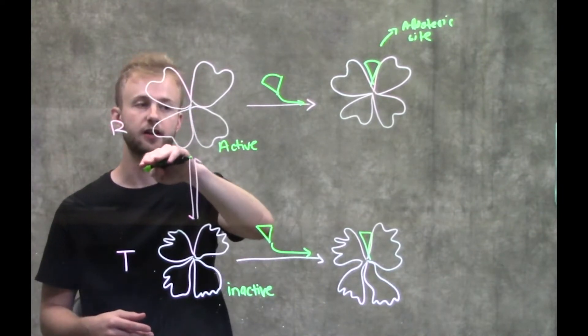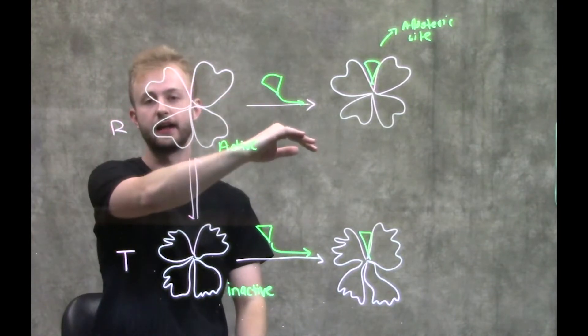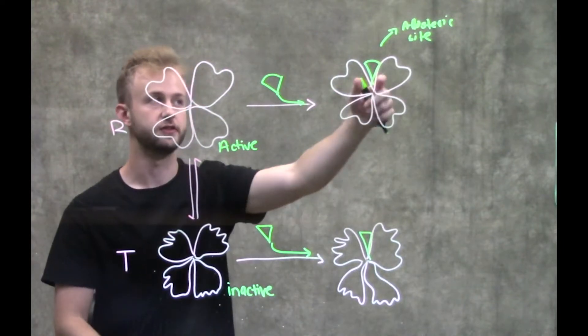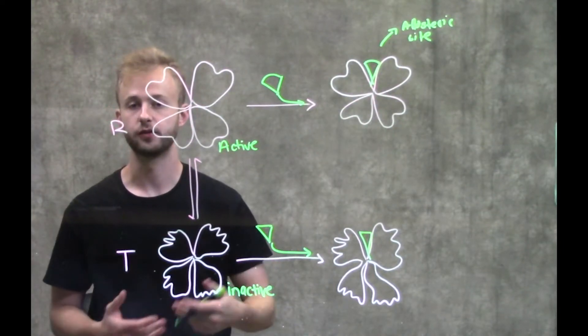In allosteric activation, we have our relaxed state, which is our active state. Then we add an allosteric activator, which will bind to the allosteric site and help keep this enzyme turned on and able to carry out its function.